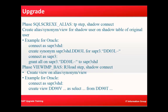In the phase VIEW_IMP_BAS, for the R3LOAD step via shadow connect, you connect as the shadow user and create views and aliases. Specifically, you create a view as SELECT FROM the relevant table. This is how synonyms and views are created for the existing tables of the old version.